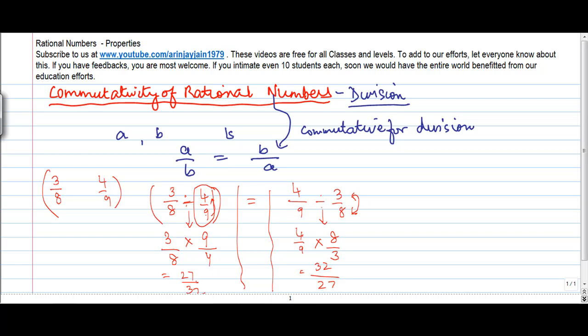Now what do I notice? We get this particular number on the left side, this on the right side and these two numbers are not equal. So we say that the rational numbers are not commutative for division.